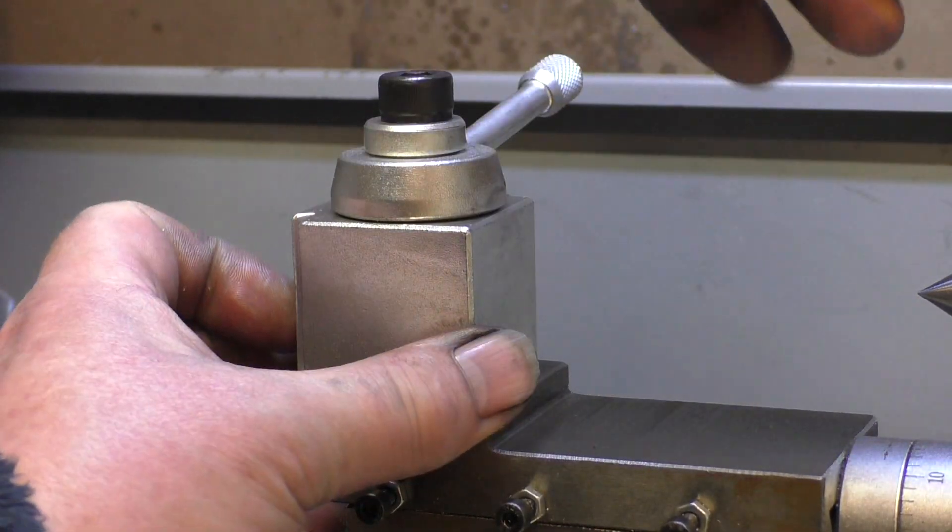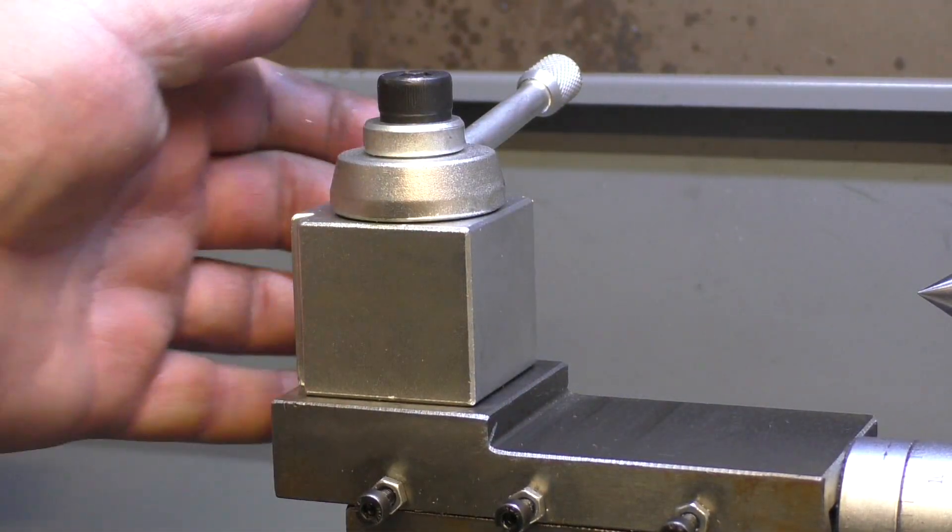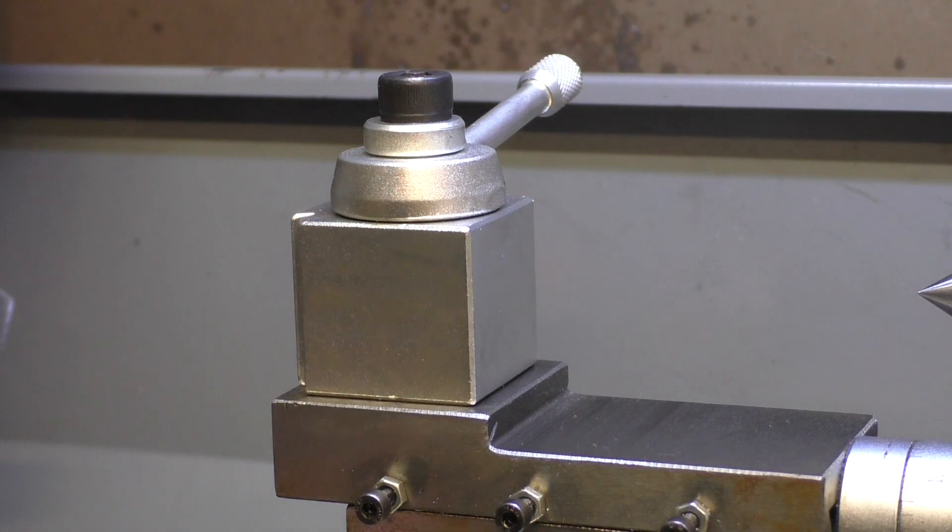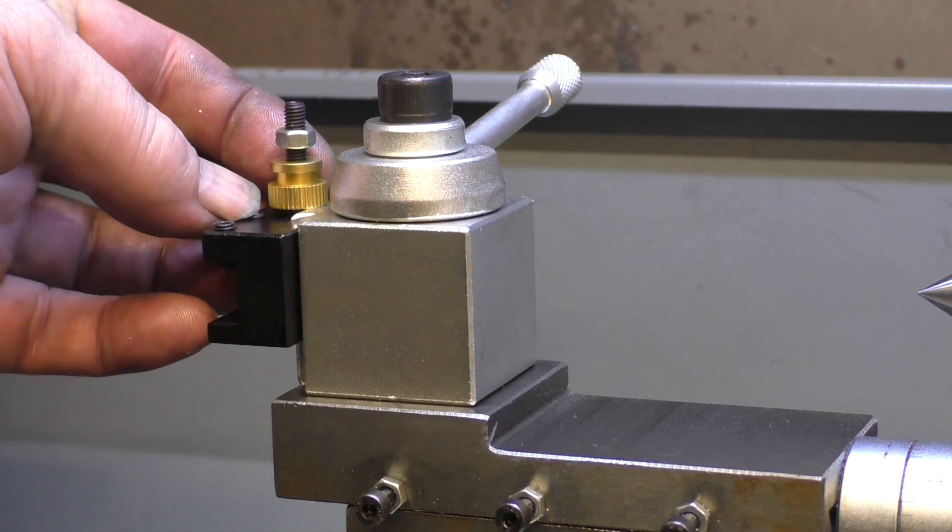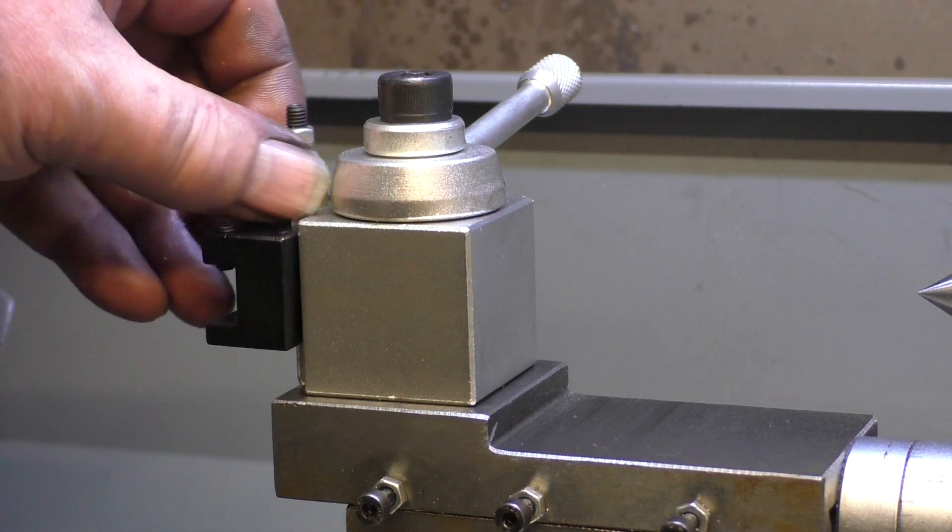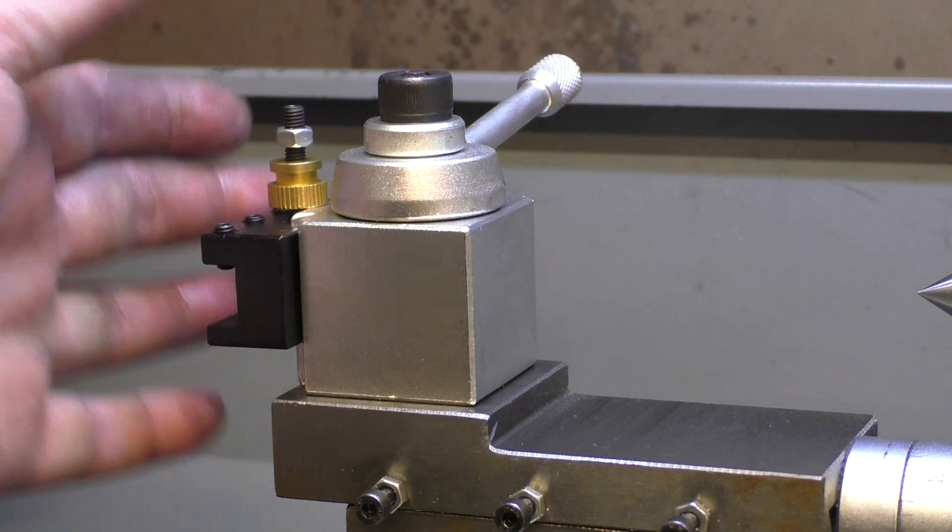As you rotate this, you can feel the pins on the sides here, front and back, moving out. And then simply to insert your tools, just drop them in there. Using the brass nut, you can adjust the height to get on centre with whichever tool you've chosen to put in there.